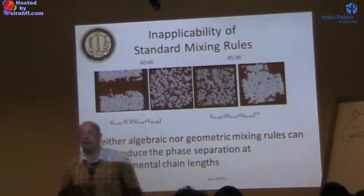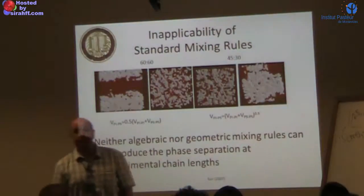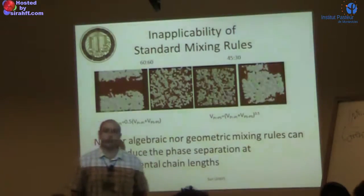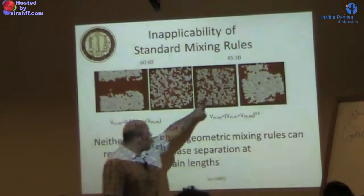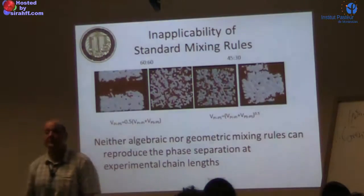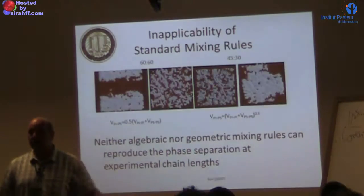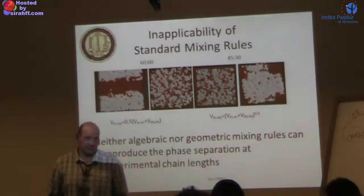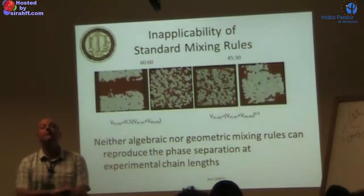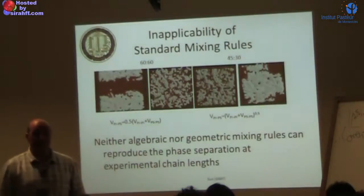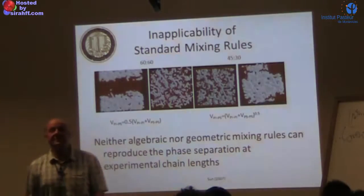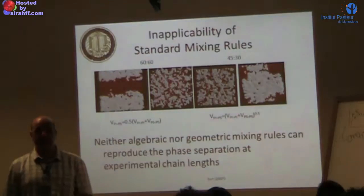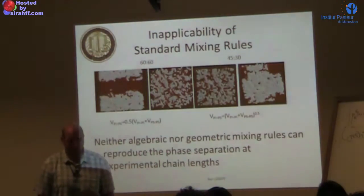For the polyisoprene-polystyrene system: when the AB interaction is specifically optimized, the system phase separates correctly. But if you use Lorentz-Berthelot mixing rules, the system stays mixed even at chain lengths where it should phase separate. You get a completely wrong phase behavior. Mixing rules at the coarse-grained level — forget about it. Even Martini does not use Lorentz-Berthelot; it uses a specific table of interactions between different molecule types.